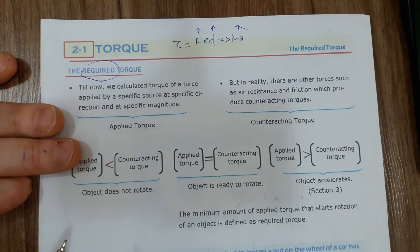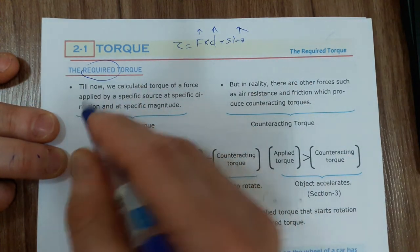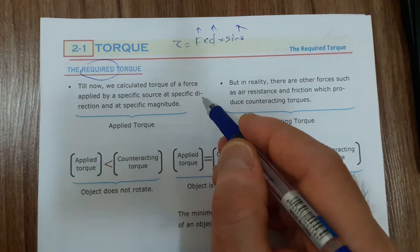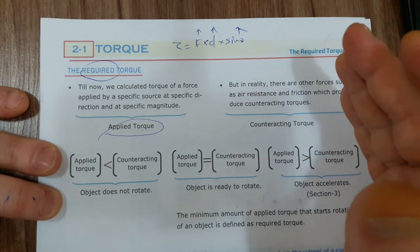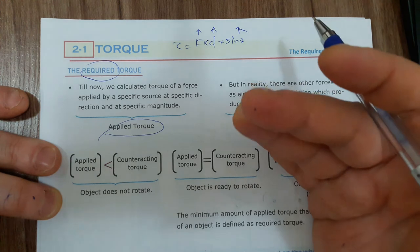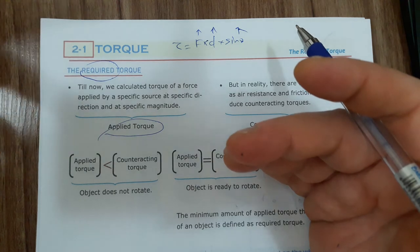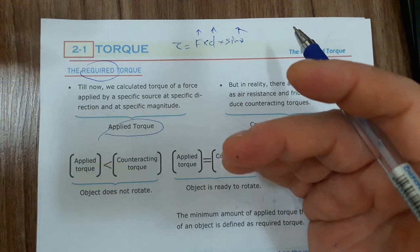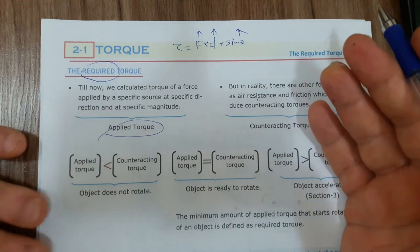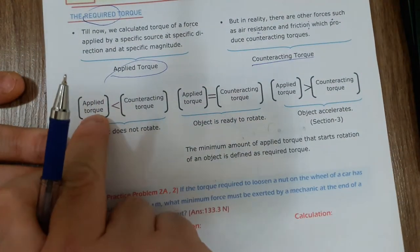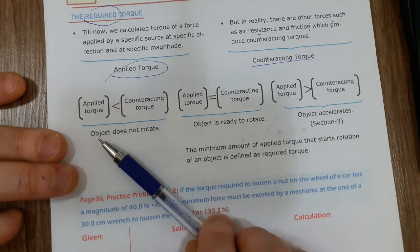Now we care about this. In reality there are other forces such as air resistance or friction which produce counteracting torques. If the applied torque is less than the counteracting torque, the object does not rotate. For example, pushing a pan with a small force — friction produces a counteracting torque greater than your finger's torque, so the pan doesn't rotate.